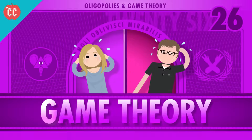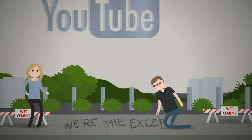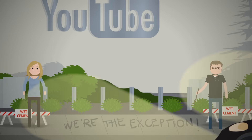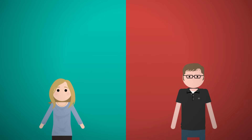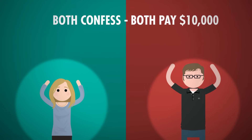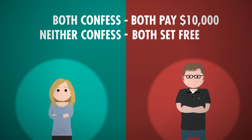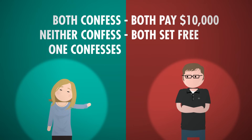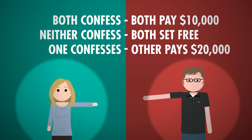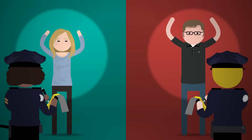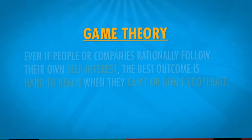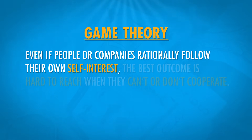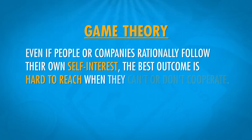Oligopolies sound like they operate like monopolistic competition, but the big difference is that oligopolies are made up of a few large companies. This means each company makes decisions with the actions of their competitors in mind. They use game theory — the study of strategic decision making. Let's start with a classic: the Prisoner's Dilemma. Suppose Stan and I are arrested for scrawling in wet cement outside the YouTube studios. We're being interviewed separately. If we both confess, we both pay a $10,000 fine. If neither confesses, we get off scot-free. And if I take a deal and confess but Stan doesn't, I walk away and Stan owes $20,000, and vice versa. Because we can't discuss it, we both confess and end up owing $10,000. Even when people or companies rationally follow their self-interest, the best outcome is hard to reach when they can't cooperate.